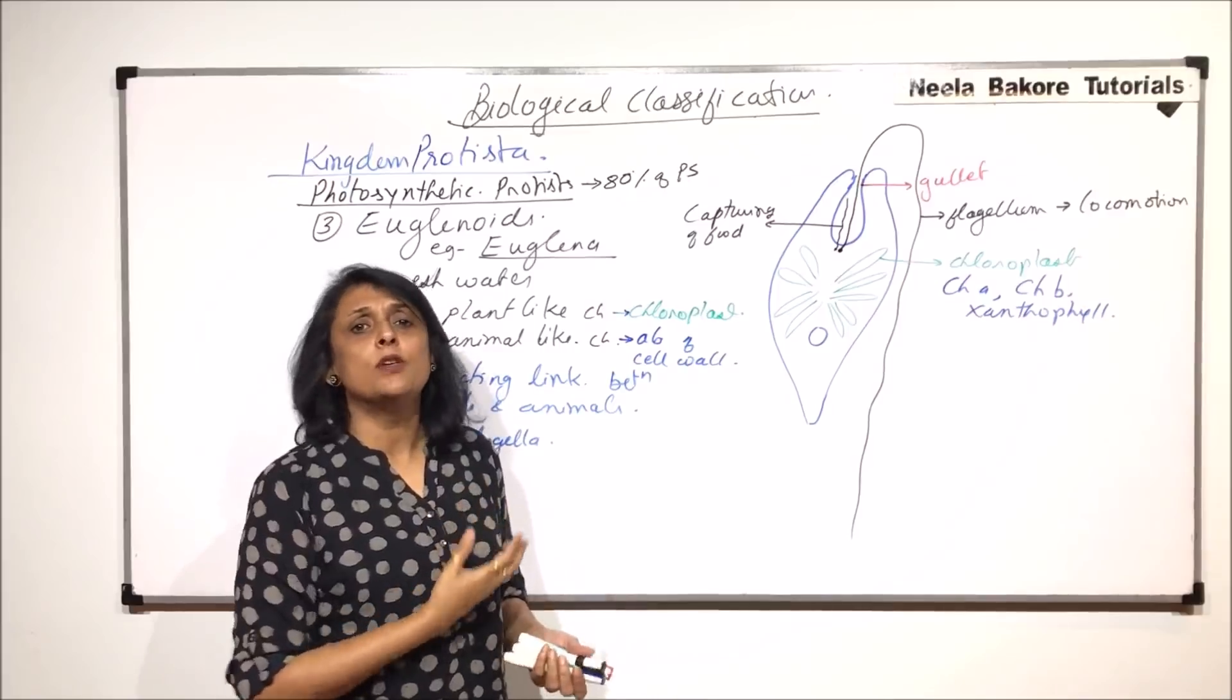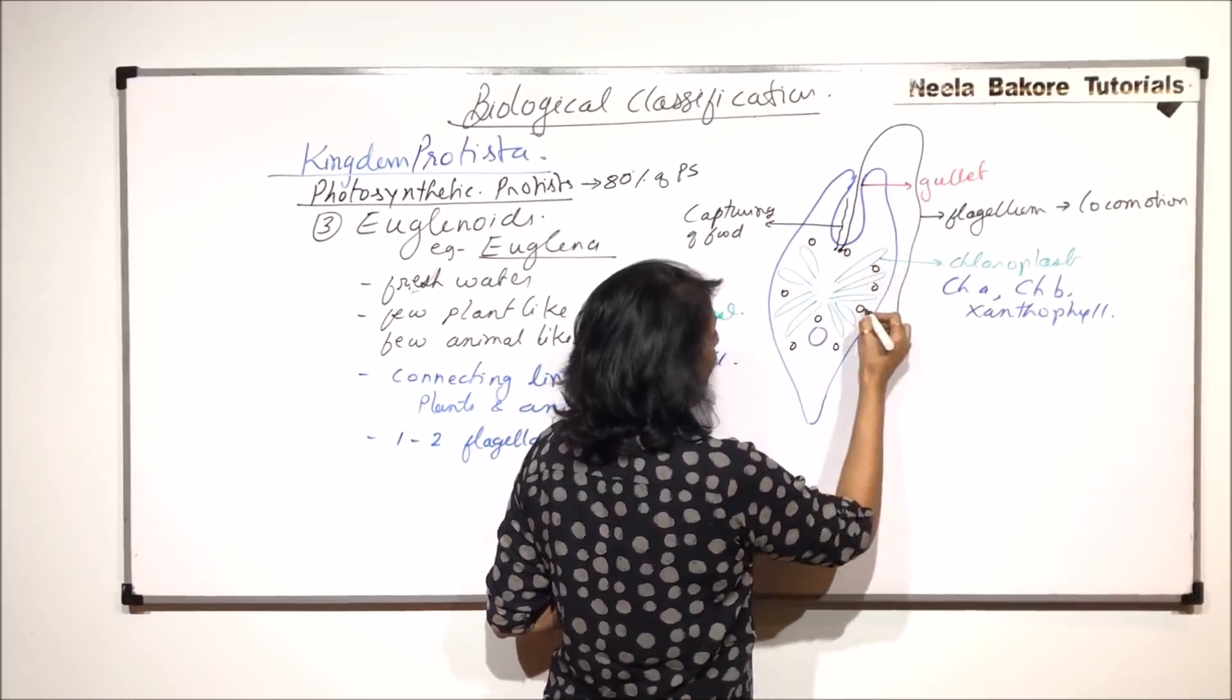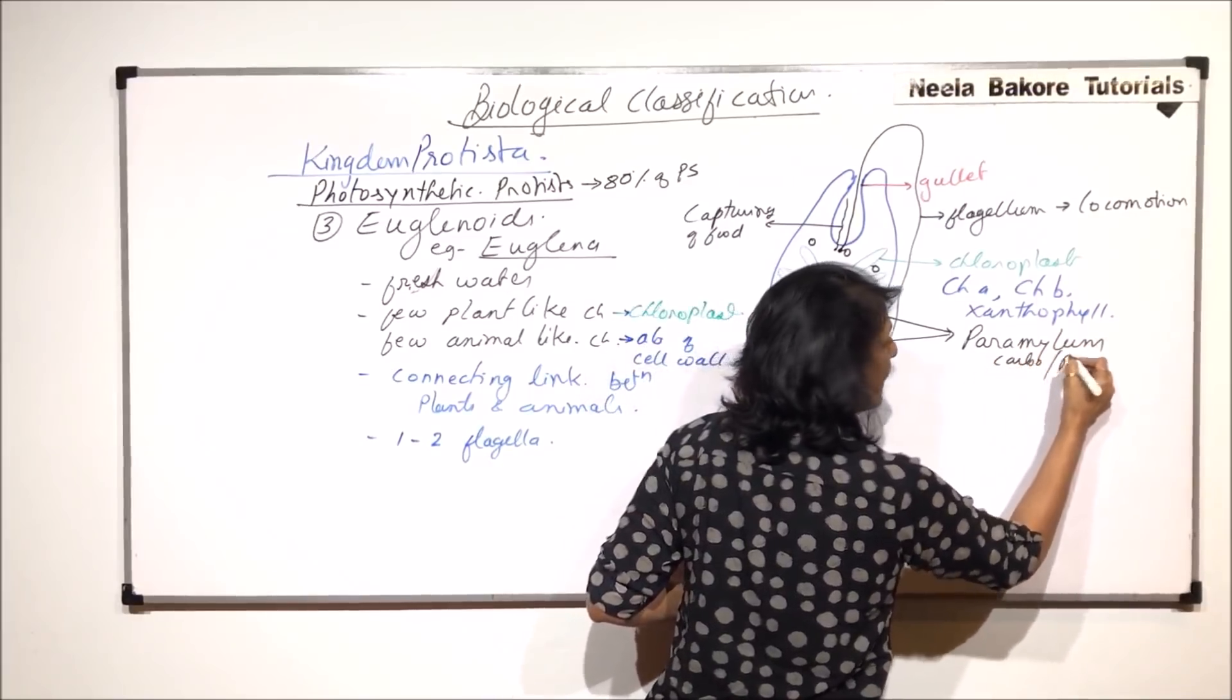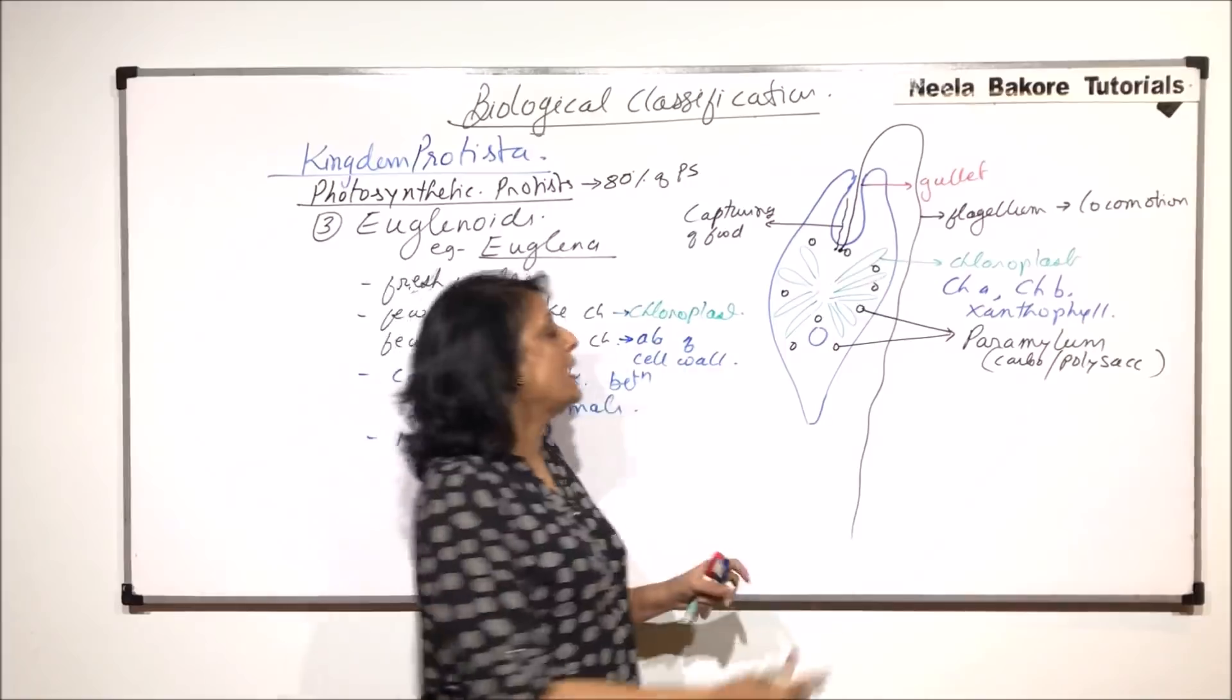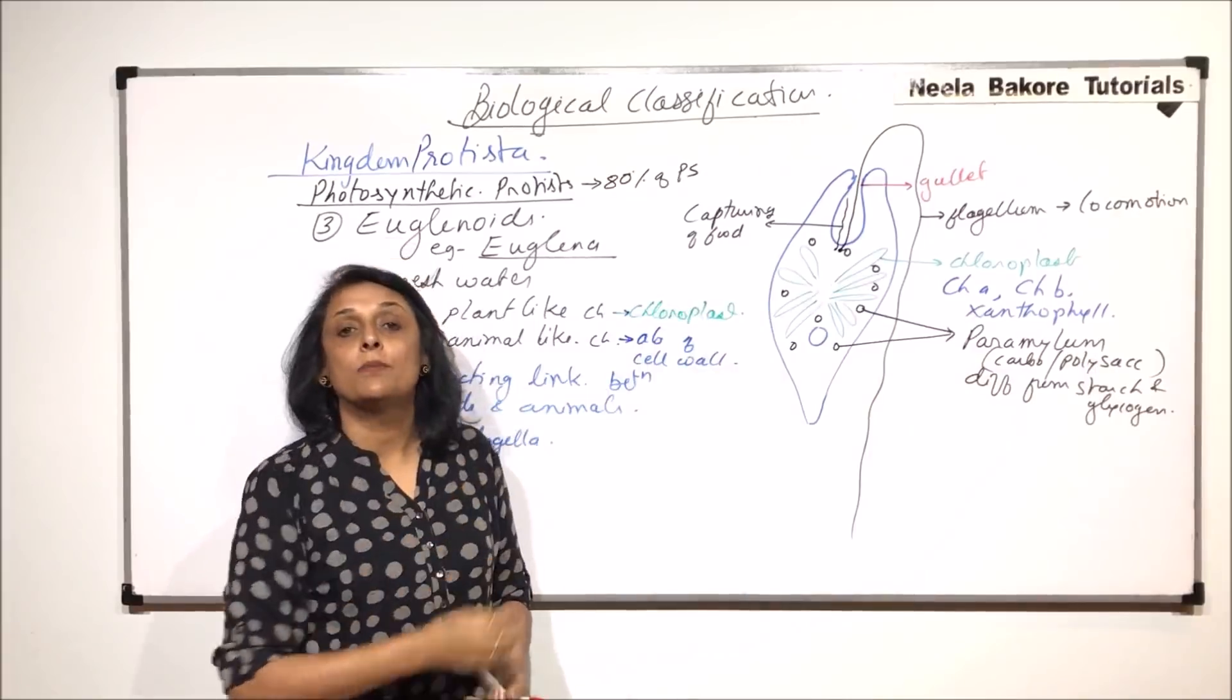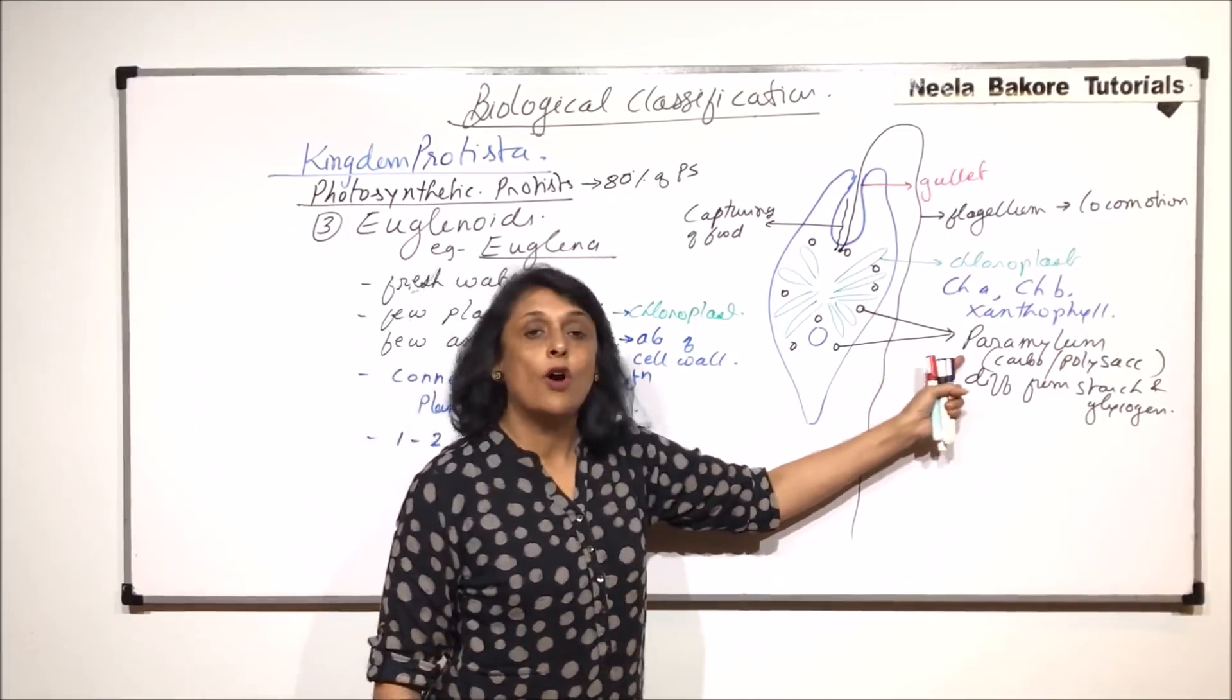In the cytoplasm, it is a typical eukaryotic cell with all other organelles, but we are not drawing all of them. In the cytoplasm are present storage particles of a substance called paramylum. Paramylum is a carbohydrate polysaccharide, but it is different from starch as well as glycogen. It is different from starch and glycogen both. In plants, the carbohydrate stored is starch, in animals it is glycogen. Euglenoids have another third type of polysaccharide called paramylum.